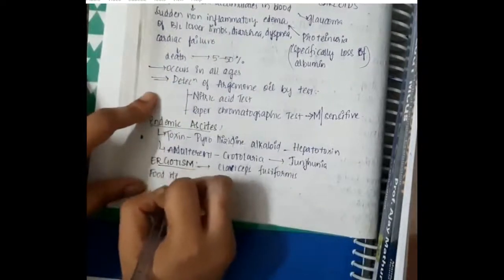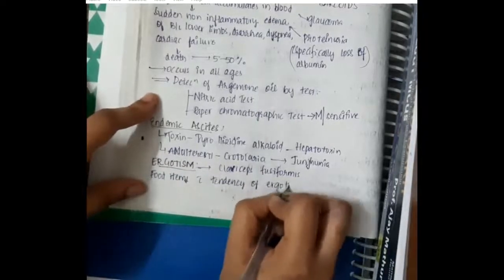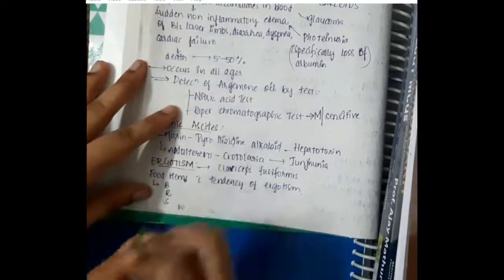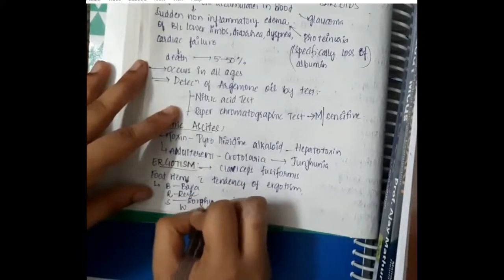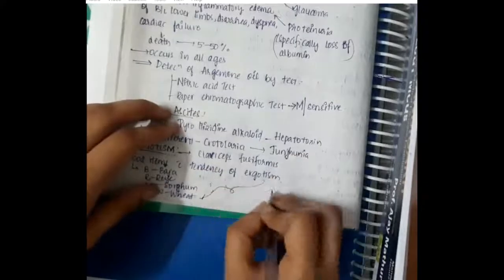The food items with tendency of ergotism include three, that is BRSW: B for bajra, R for rye, S for sorghum, and W for wheat. These food items can cause ergotism.